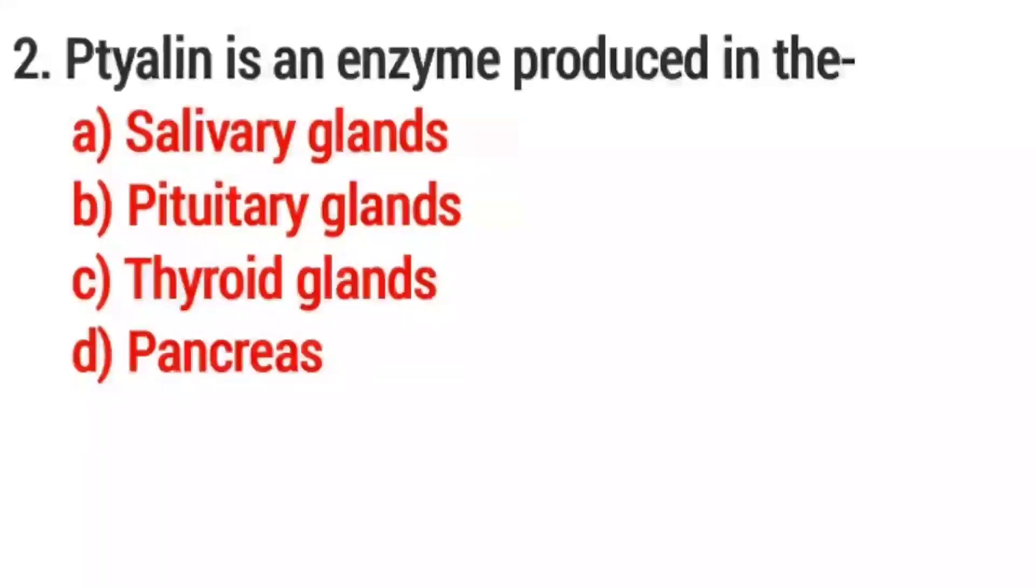2. Ptyalin is an enzyme produced in the? Option C. Salivary glands.